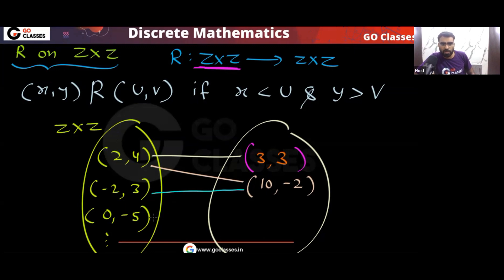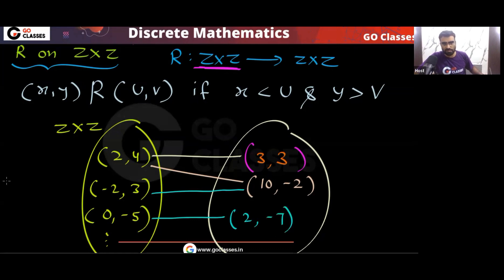What about (0, -5)? That is related to, for example, (2, -7), since 0 < 2 and -5 > -7. So now you understand the relation.